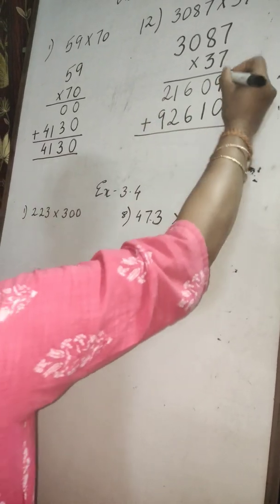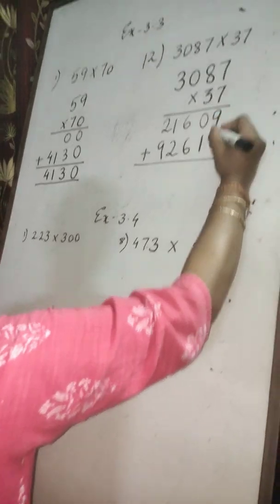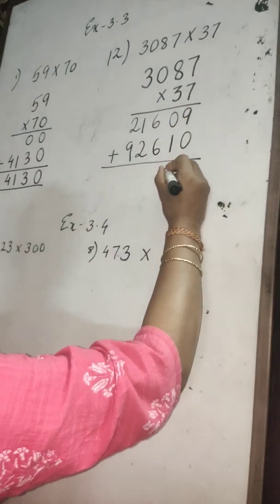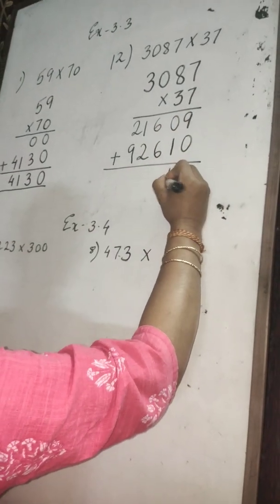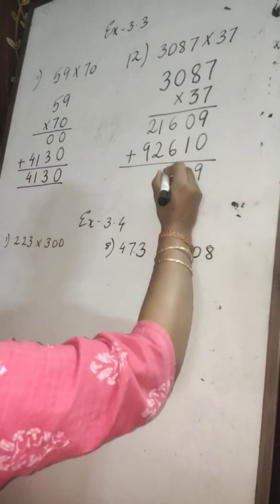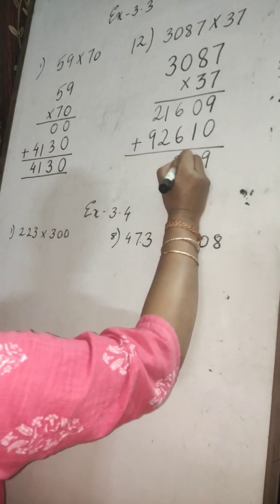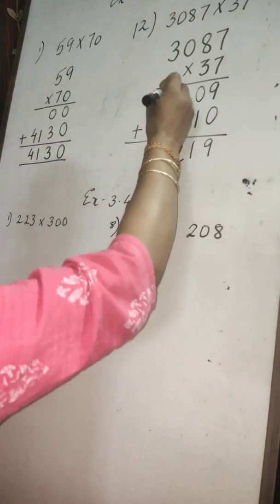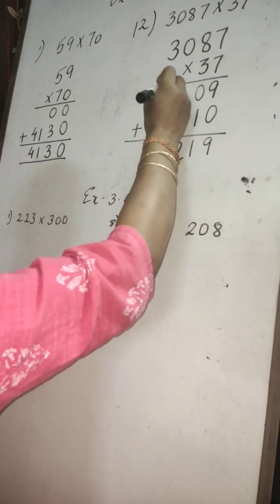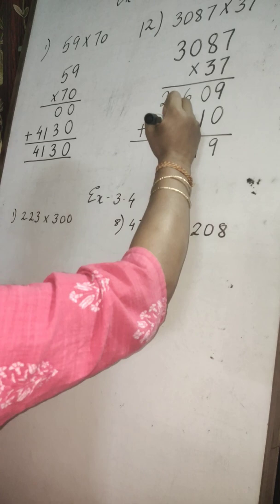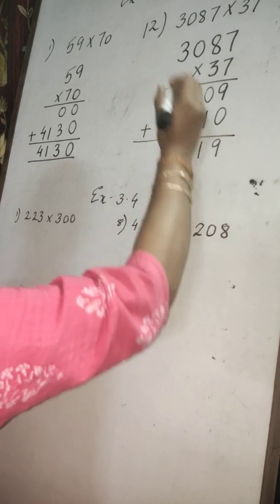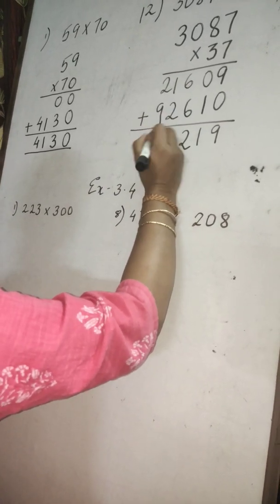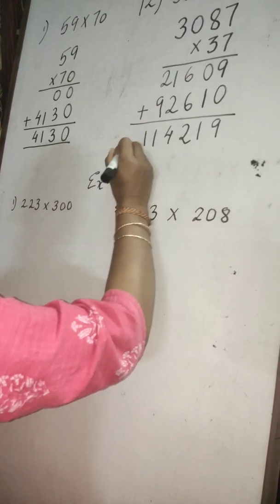Give the plus sign. 9 plus 0 is 9. 0 plus 1 is 1. 6 plus 6 is 12, carry 1. 1 plus 2 is 3 plus 1 is 4. 9 plus 2 is 11. I hope you all understood how to multiply with a 2-digit number.